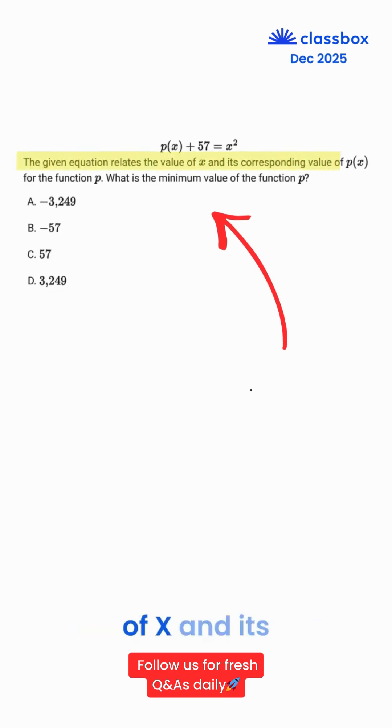The given equation relates the value of x and its corresponding value of p(x) for the function p. What is the minimum value of the function p?